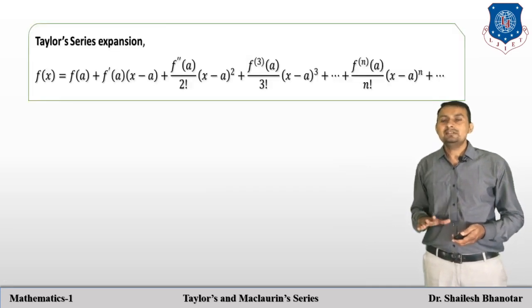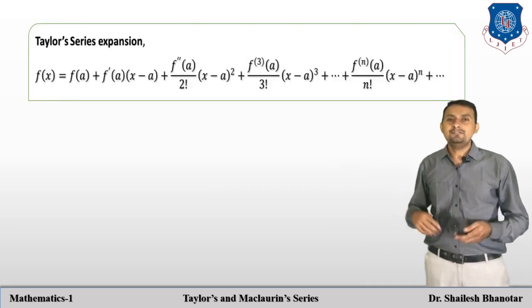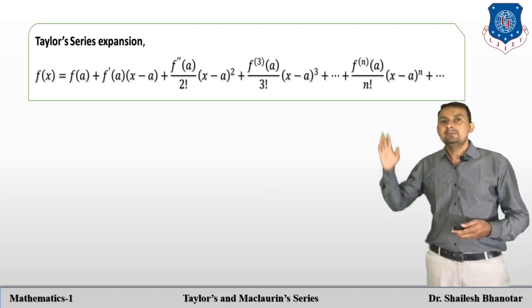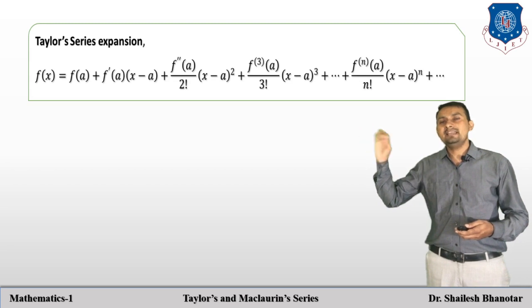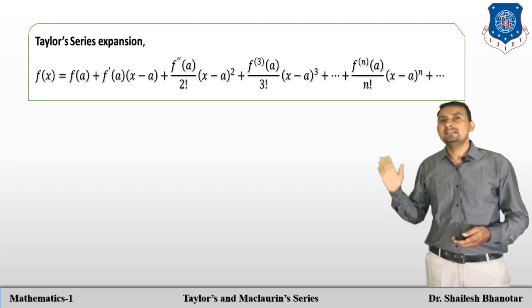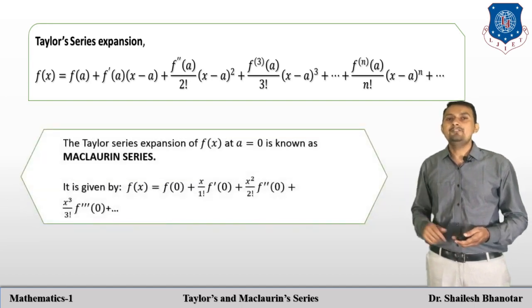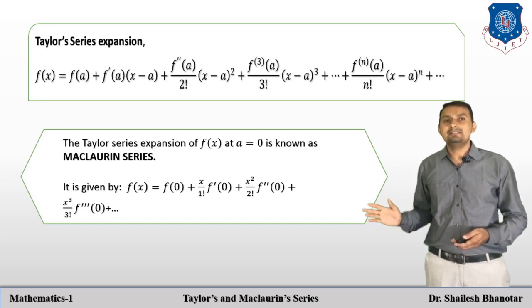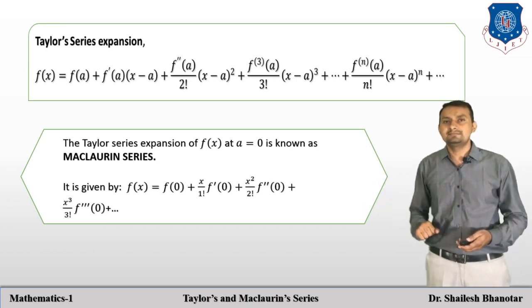Today we are going to discuss about the Maclaurin series. The first question is: how can we get the Maclaurin series? If the Taylor series expansion is about a = 0, then it becomes the Maclaurin series. So just put a = 0, and the form will be f(x) = f(0) + x/1! · f'(0) + ... and this is the Maclaurin series representation.